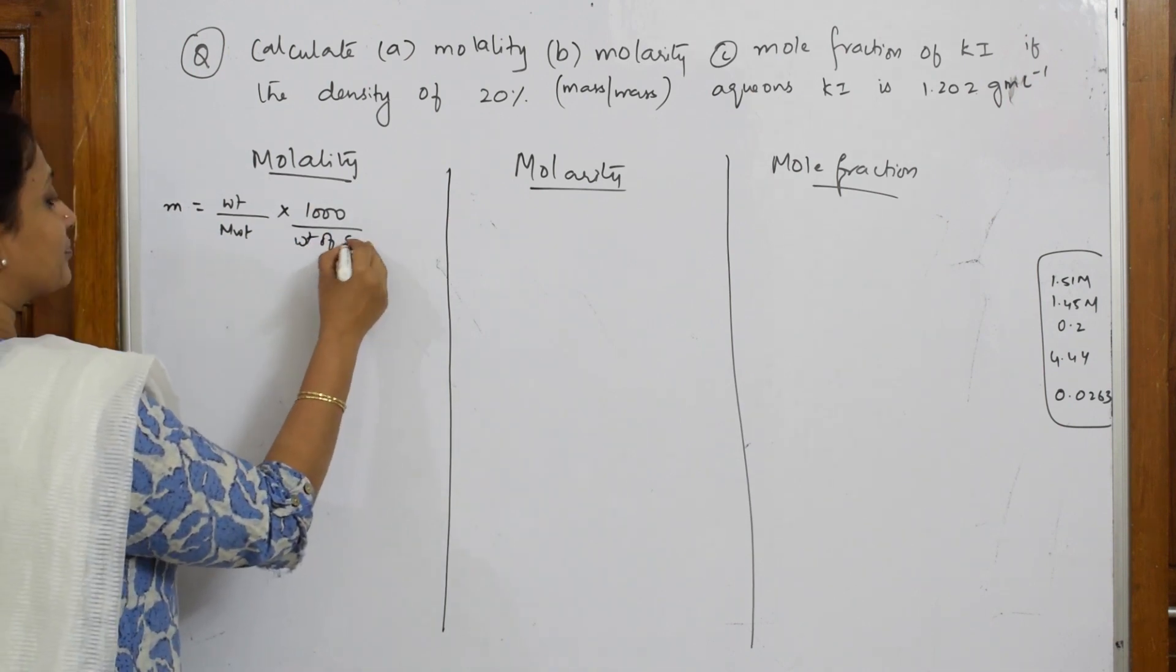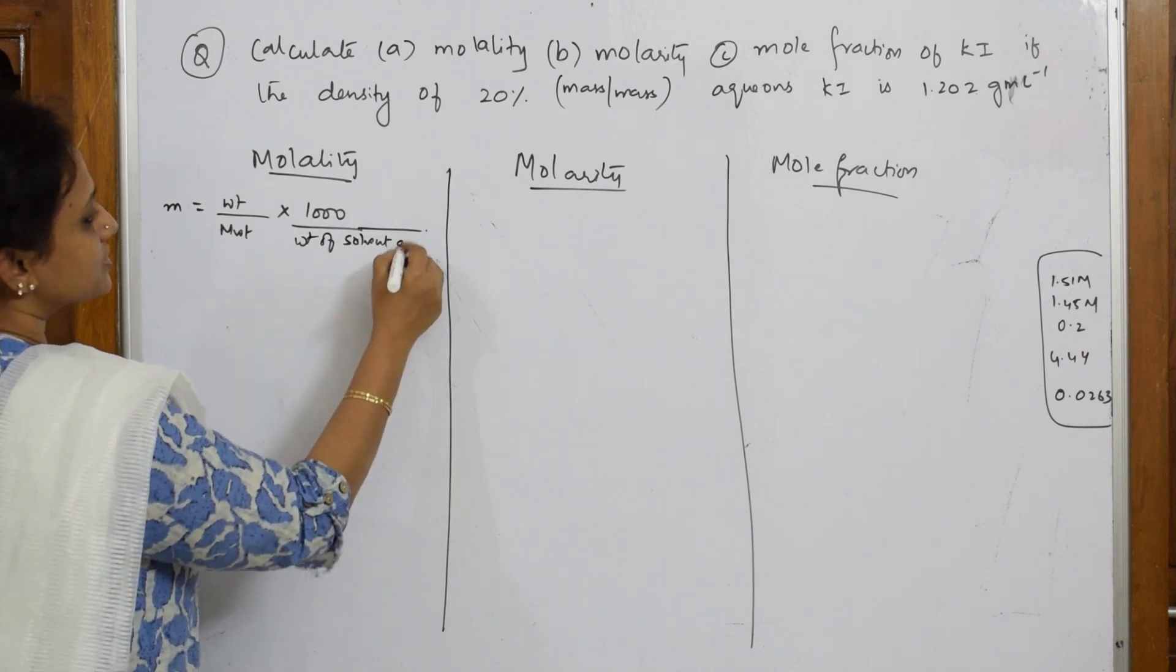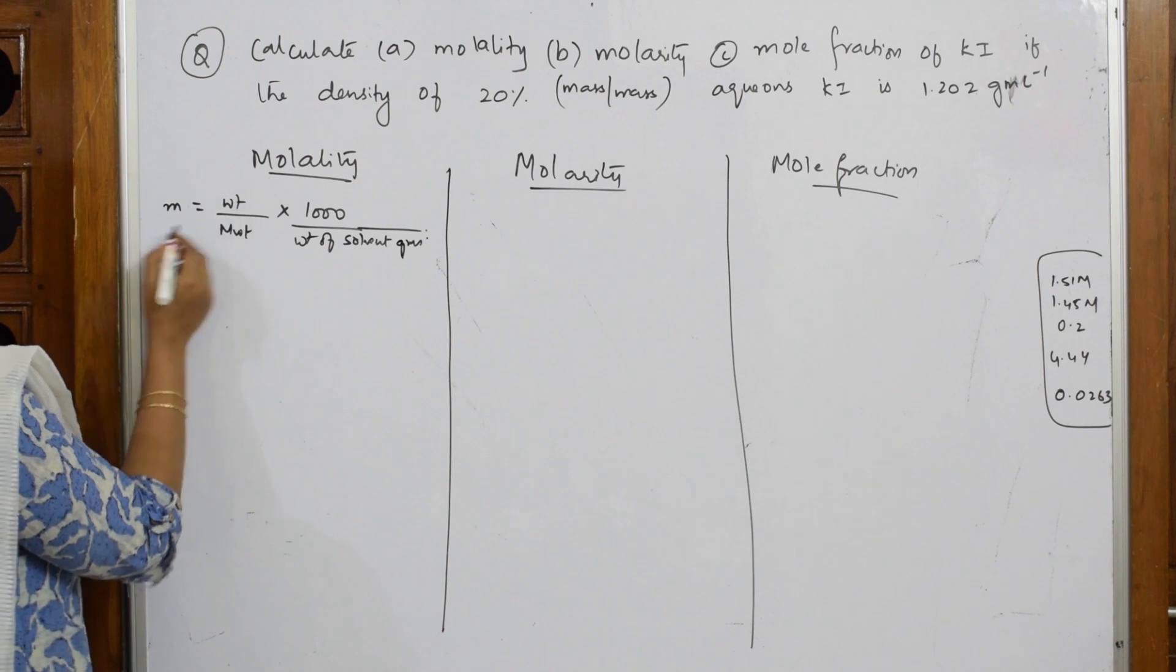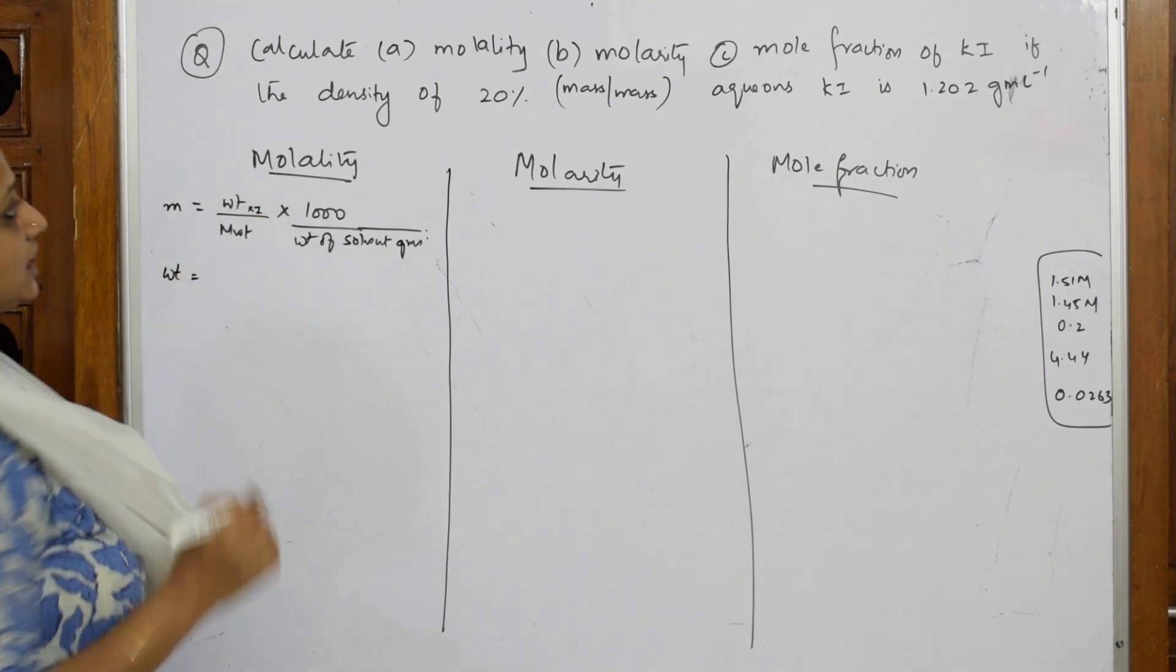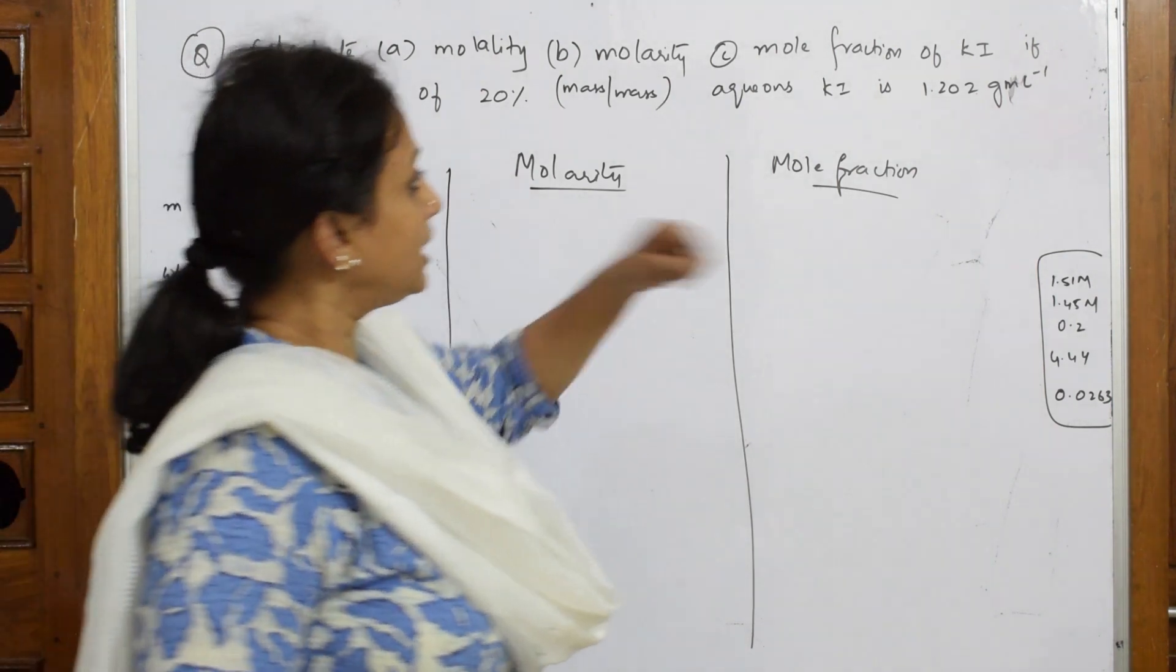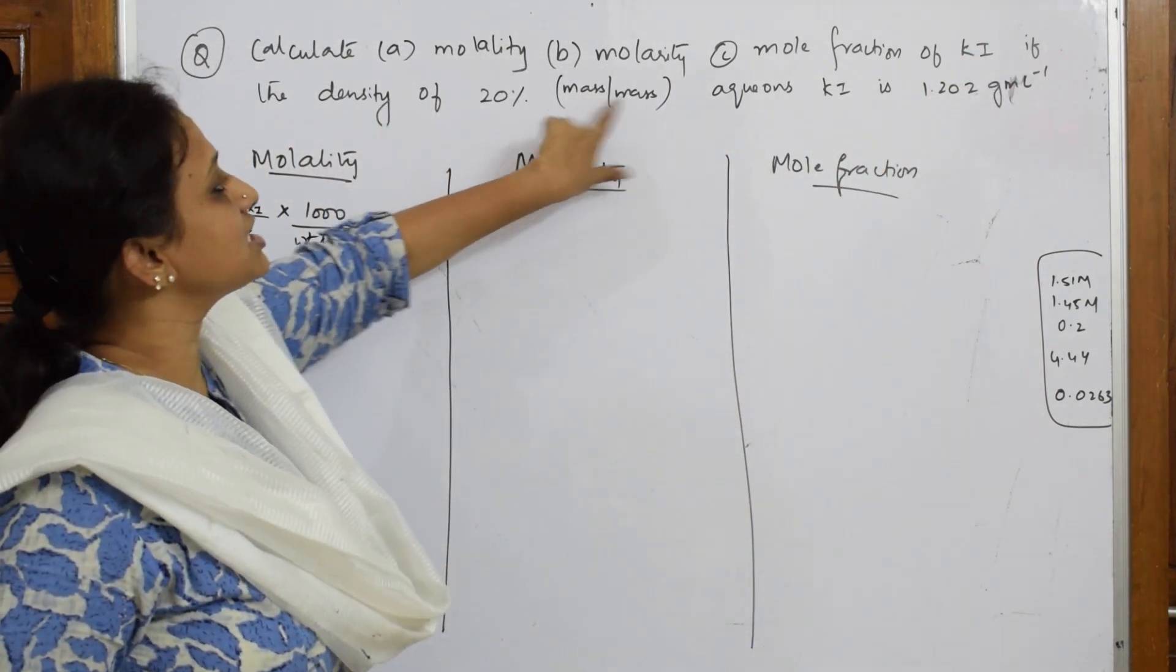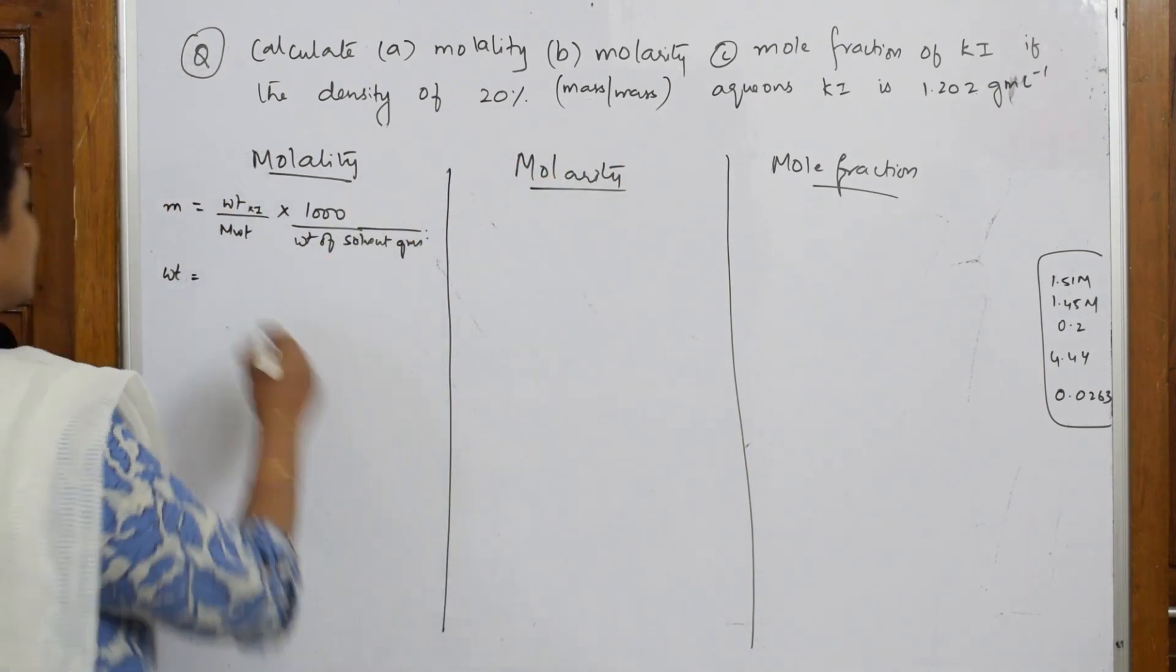Weight of solvent here given in grams. Here, what is this? This is the weight of potassium iodide. What is the weight of potassium iodide? They said potassium iodide, the density is 20% mass by mass. They've already given me the weight as 20 grams.